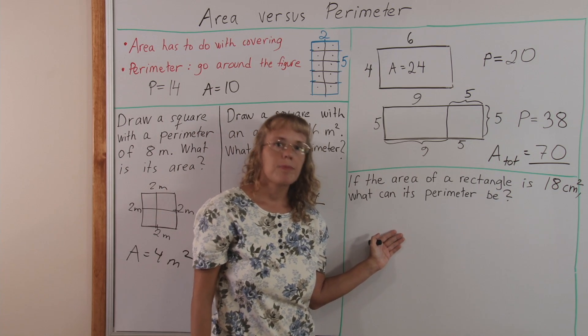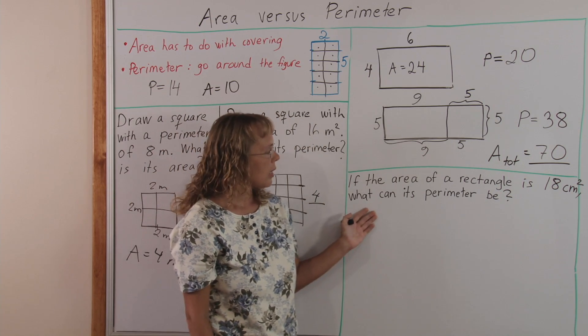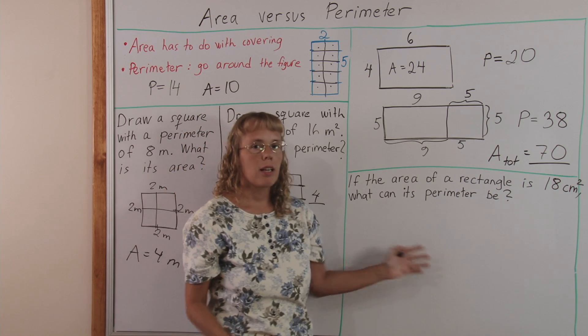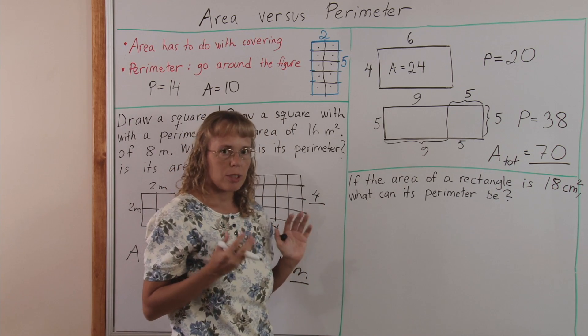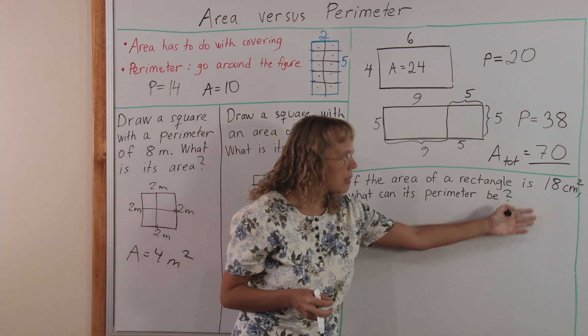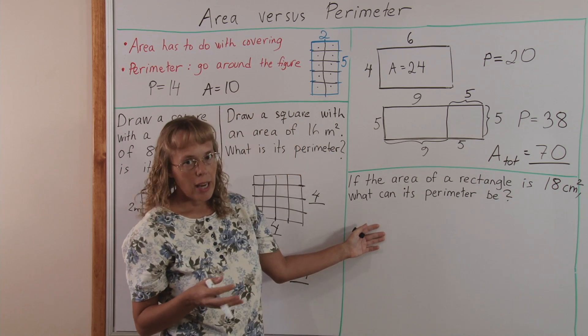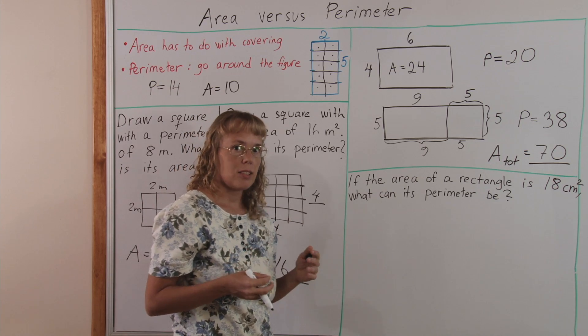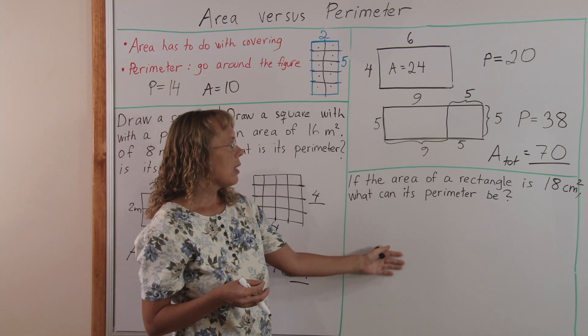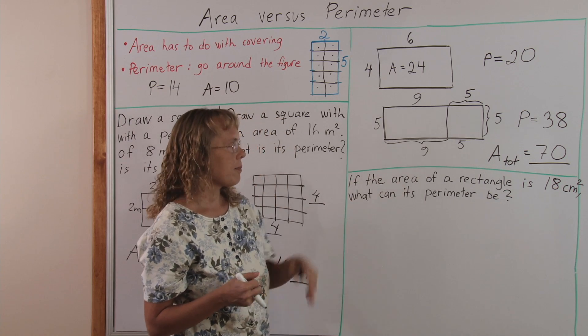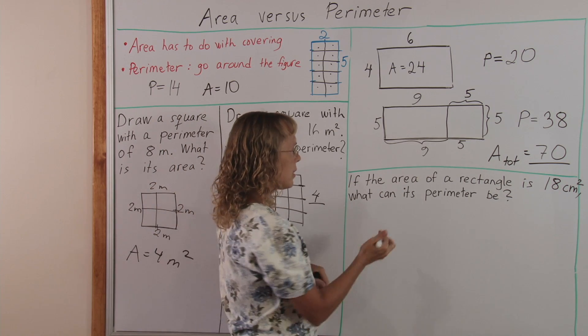The last problem I wrote here is kind of an open-ended problem. It is very good for students when they are dealing with these two concepts. If the area of a rectangle is eighteen square centimeters, what can its perimeter be? Now there's many answers to this problem, because we can make many different rectangles with that area.